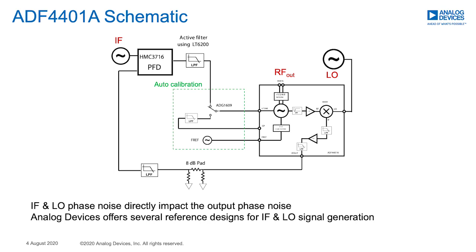Once the calibration is done, the translation loop is enabled by switching in the phase frequency detector HMC3617. The IF output of the ADF4401A will be compared to an external IF signal and, through the loop shown here, the frequencies will be locked.